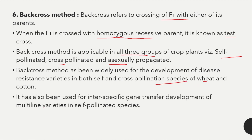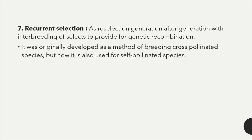The backcross method has also been used for interspecific gene transfer and development of multi-line varieties in self-pollinated species. The last breeding method is recurrent selection — a reselection generation after generation with interbreeding of selects to provide genetic recombination. Originally developed for cross-pollinated species, it is now also used for self-pollinated species.